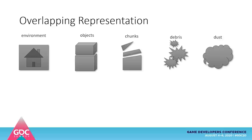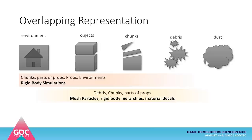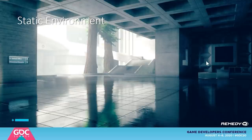In a game engine, we're looking at an overlapping representation in three different layers. First, rigid body simulations — chunks and parts of props, RBDs, environment meshes, objects like chairs or tables. As things get smaller, you represent them with mesh particles, rigid body hierarchies, or material decals to sell material richness. Then the last layer is pure particles — for embers, sparks, smoke, fire, splinters, gravel, sand — filling that gradient.